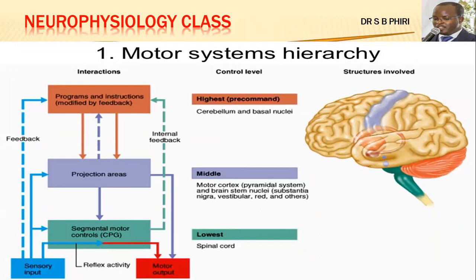On top of the five levels, we also have a motor system hierarchy. The highest level is called the pre-command level, involving the cerebellum and the basal ganglia — this is where you have initiation and planning of motor function. The structures involved are the cerebellum and the basal nuclei, which are derivatives of the diencephalon. At the highest level there are programs and instructions that can be modified by feedback mechanisms.